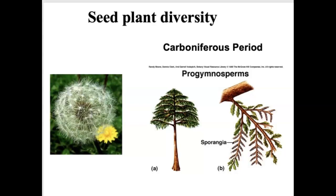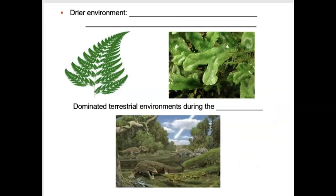As we get into seed plants, we want to figure out what was the advantage of a seed plant over a non-vascular plant or a spore-producing plant. The environment played a big role here. During the Carboniferous period, what we saw was a change in environmental conditions where terrestrial environments started to get drier. So if you're a vascular or non-vascular plant — like this liverwort here — you don't do well in a dry environment.